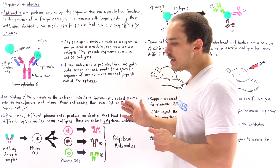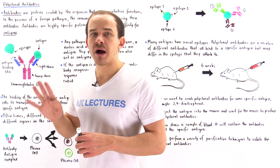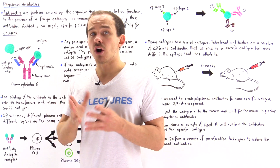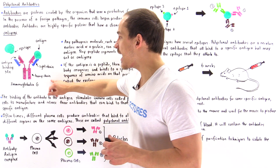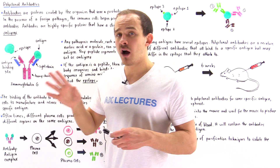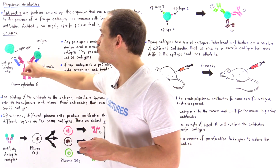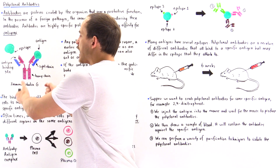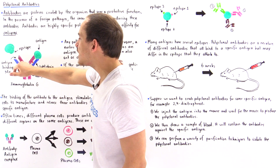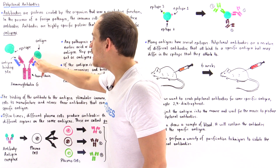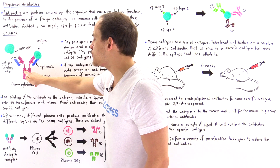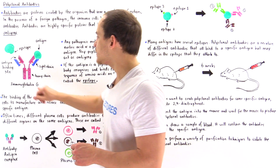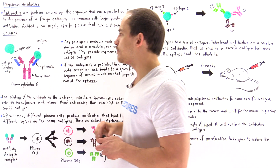Immunoglobulin G consists of four polypeptide chains. Two of these chains are large and we call them heavy chains — they're the purple ones. And the other two are light chains, shown in blue. These blue light chains are connected to the purple heavy chains by disulfide bonds, and the two heavy chains are connected to each other also by disulfide bonds, as shown by the red bonds.